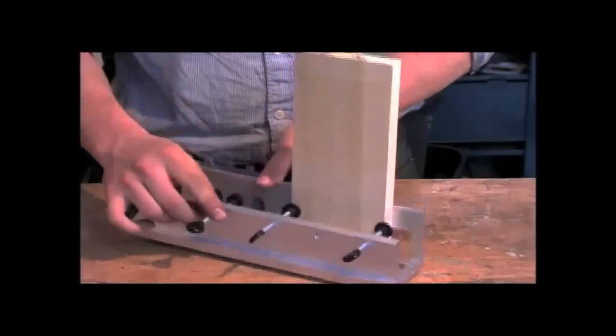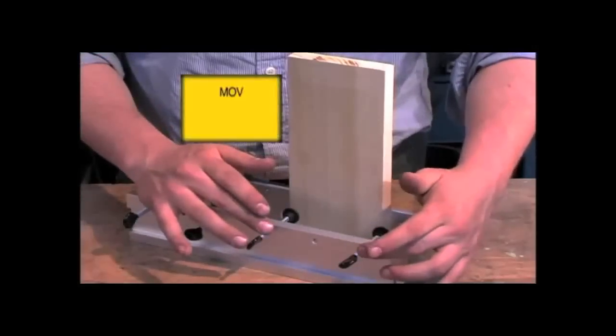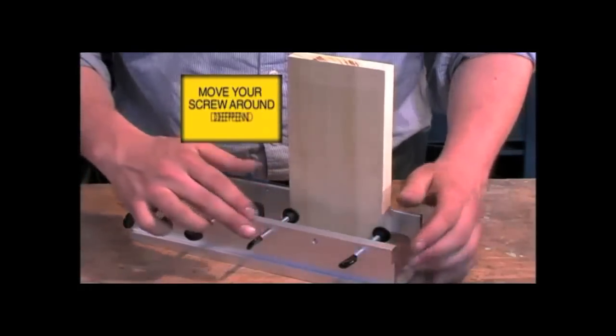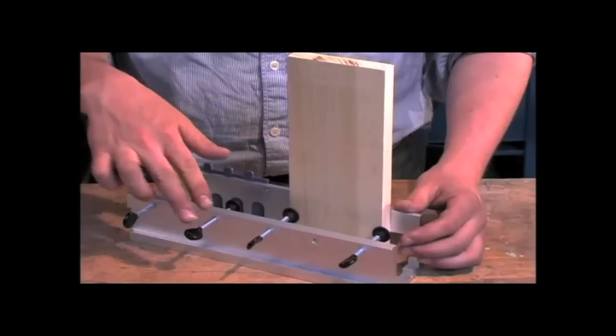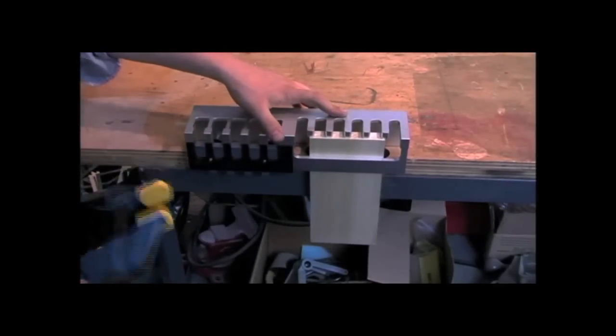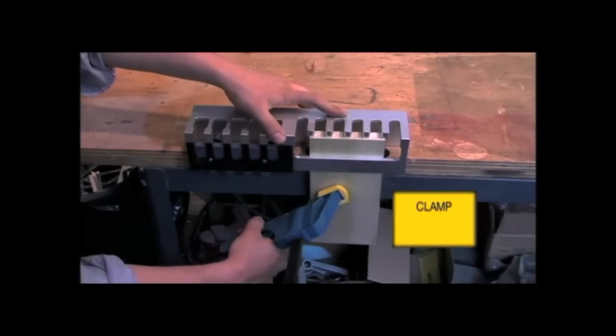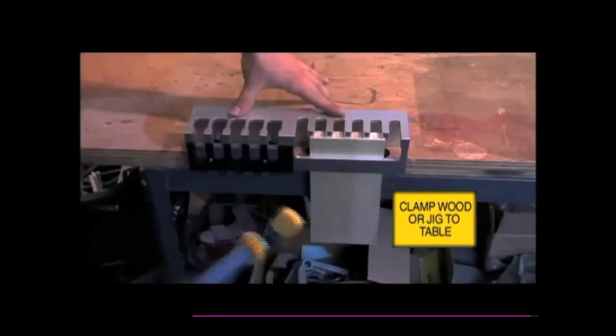If your wood is thinner than the spacing of these two, you can either readjust the thumbscrew to the center position or take a clamp from the other side and use three. So it fits over the edge of your workbench and you'll either clamp the wood to your bench or clamp the jig to the bench.